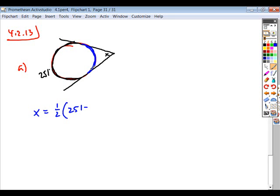It's the entire other portion of this arc. The whole other portion of that circle's arc lies inside the angle. And so if we just take the difference of 360 minus this known measure, 251, we get our arc measure of 109.